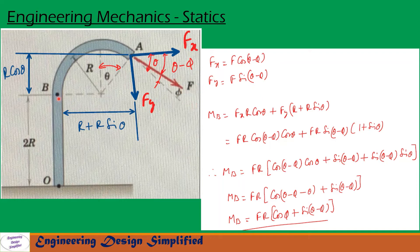The moment due to F about point B can be written as fx times this distance plus fy times this distance: M_B = fx·r·cos(θ) + fy·(r + r·sin(θ)). Substituting fx and fy and simplifying, M_B becomes Fr times [cos(θ - φ)·cos(θ) + sin(θ - φ)·sin(θ)]. The last two terms simplify using the cosine difference identity to cos(θ - φ - θ), giving the final expression: M_B = Fr·(cos φ + sin(θ - φ)).